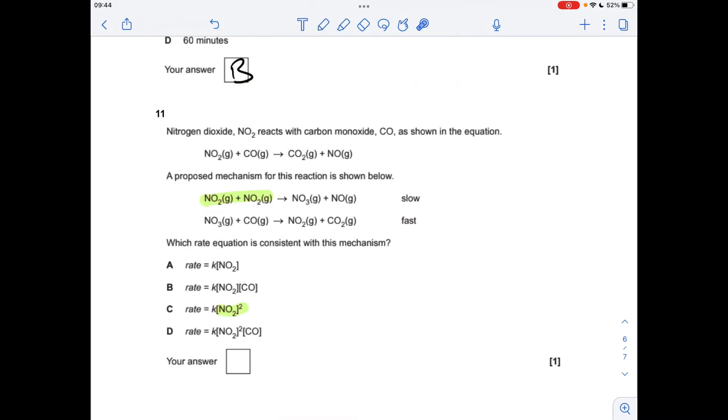Final question. So the species involved in the slowest step are the species that are in the rate equation. And the number involved tells you the order. So obviously we're looking for that one there basically. So the answer is C.